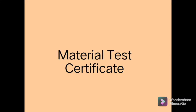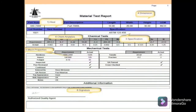Hello guys, today we are discussing about the material test certificate. As you can see, this is an MTC — you can also call it an MTR. MTC means Material Test Certificate. It contains the heat number, mechanical properties, chemical properties, and material specification.